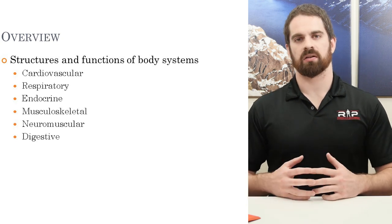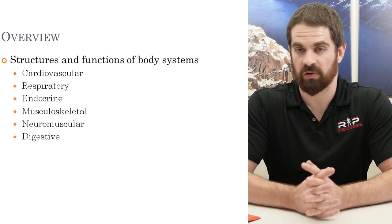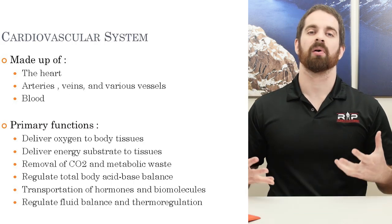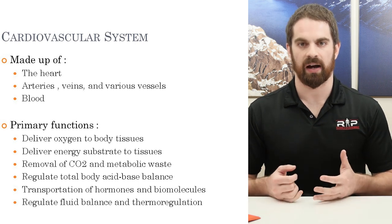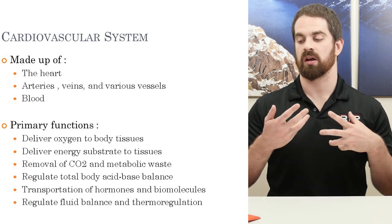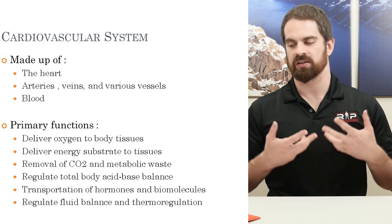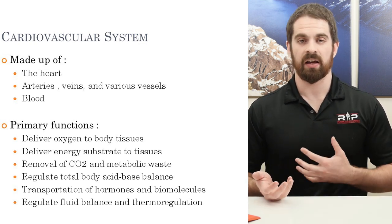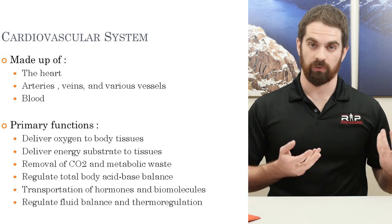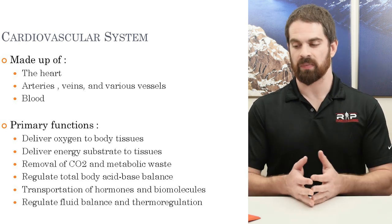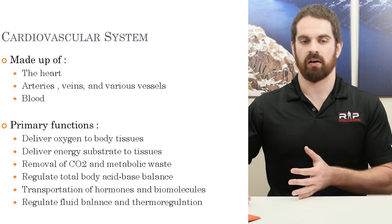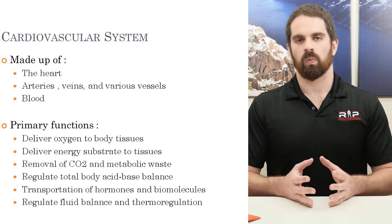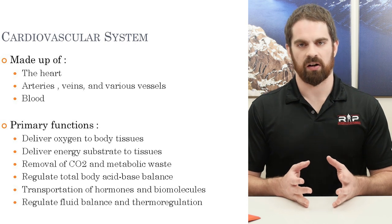The first system is the cardiovascular system. Most of us are pretty familiar with this. The cardiovascular system is basically everything pertaining to how blood is exchanged throughout the body — more specifically, the heart, arteries, veins, and different vessels carrying oxygenated or deoxygenated blood. Some blood could be full of waste, some full of nutrients — anything carrying blood from one part of the body to another. So what are some primary functions of the cardiovascular system?